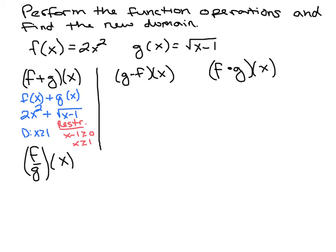g minus f of x is the same thing as g of x minus f of x, which is the square root of x minus 1 minus 2x squared. That one's completely simplified. So our new domain is x is greater than or equal to 1. Same restrictions because it's the same situation.